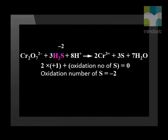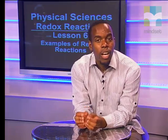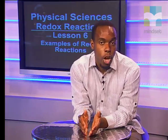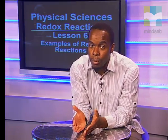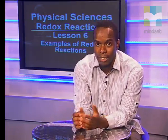If we look at the sulfur ions, the ions change from −2 to 0 on the product side. The sulfur has become more positive, which tells us it has lost electrons. And therefore, the sulfur has been oxidized.